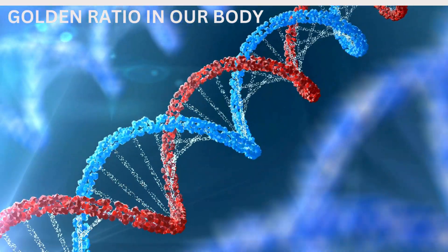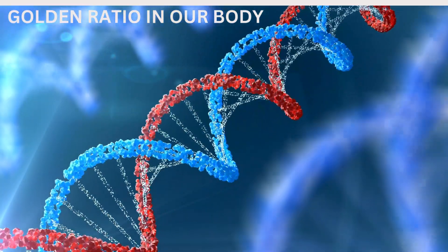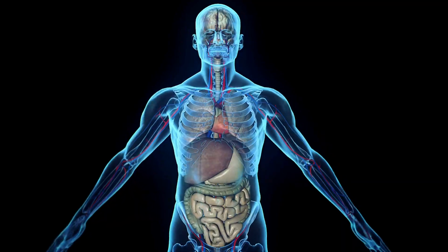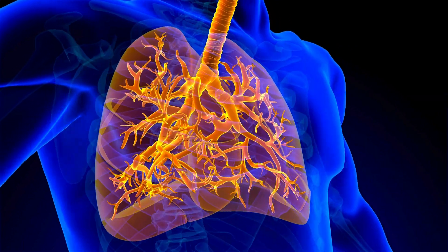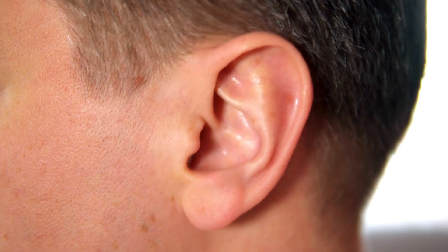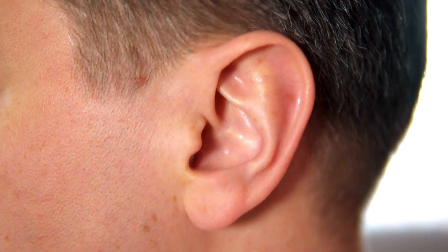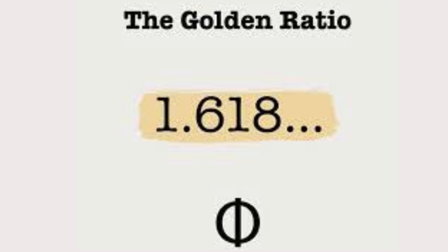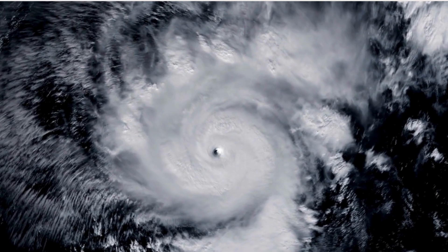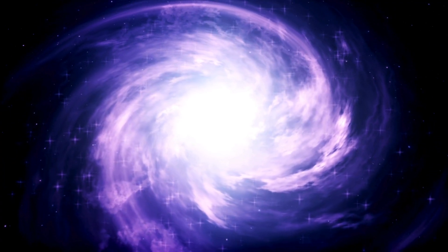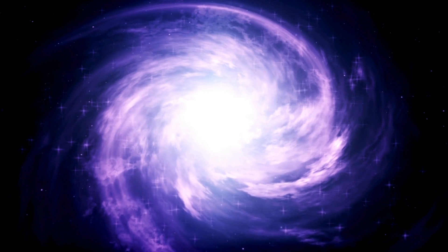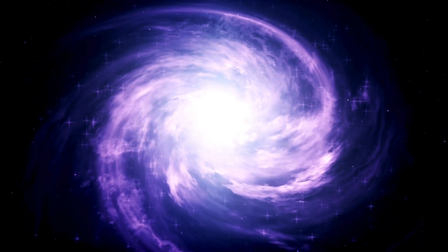The golden ratio is in the helix of our DNA. Your whole body is a symphony of the golden ratio — the rhythm of our heartbeat and the design of our lungs. Sound waves passing through our ears move in a golden spiral, a perfect representation of this mysterious number. It's also visible on a grand scale, as seen in the spirals of hurricanes, tornadoes, and even in the structure of galaxies, including our Milky Way.